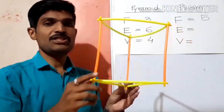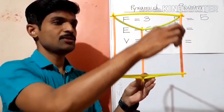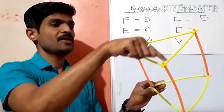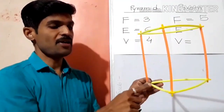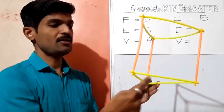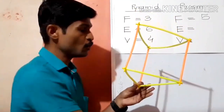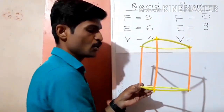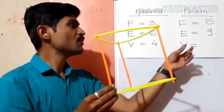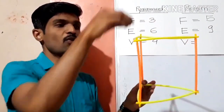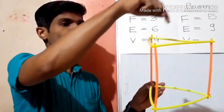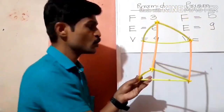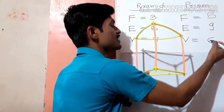Now let's see the edges: one, two, three, four, five, six, seven, eight, nine — so nine edges. Next are the vertices, all the corners: one, two, three, four, five, six — so there are six vertices.